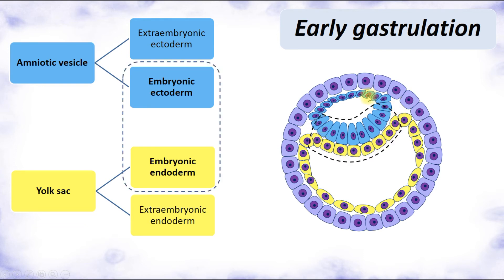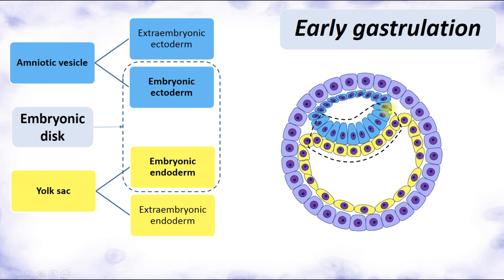The place of attachment where embryonic ectoderm is attached to embryonic endoderm is called the embryonic disc. Here we can see the embryonic disc — it is a bilayer embryo. Only this part of the embryo will participate in the formation of the body of the embryo. The embryonic disc includes only embryonic ectoderm and embryonic endoderm, forming a two-layered embryonic disc.